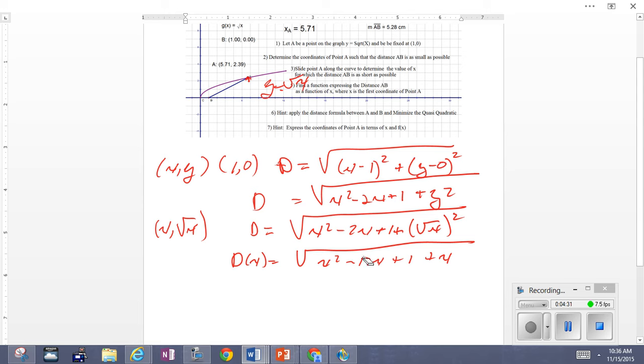This gives us the distance as a function of x. We get x² - 2x + 1 + x. Collectively, D(x) = x² - x + 1. There's our function, which is a quadratic underneath a radical, which is quasi-quadratic, which means x = -b/(2a) comes into play.